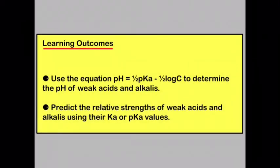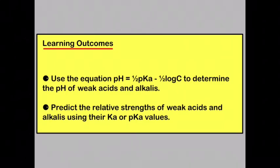By now you should be able to use the equation pH equals a half pKa minus a half log c to determine the pH of weak acids and weak alkalis, and you should be able to predict the relative strength of weak acids and alkalis using either the Ka or the pKa values.